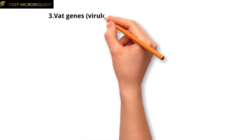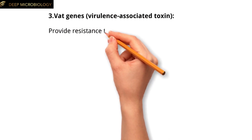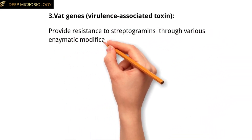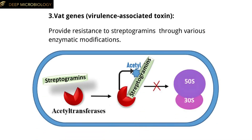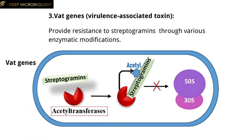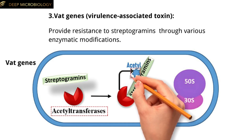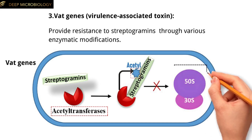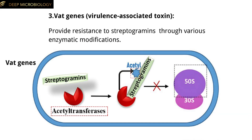The third type is VAT genes, virulence-associated toxin, which provide resistance to streptogromins through various enzymatic modifications. VAT genes encode enzymes such as acetyltransferases that chemically modify streptogromins by adding an acetyl group to the antibiotic. This modification changes the shape of the antibiotic, thereby reducing its affinity for the ribosomal target, which is essential for its action in inhibiting protein synthesis.